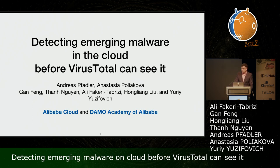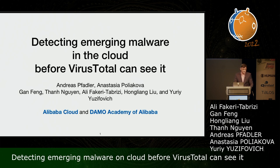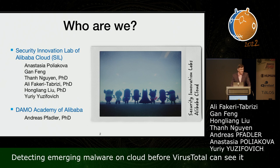We're going to talk about the work we've been doing for probably a year to develop the machinery to detect emerging malware in the cloud at scale using fuzzy hashing. A large team worked on this project. Anastasia Polikova and I, Yuri Zahh, are presenting today, but I want to mention by name that Gan Tan, Ali, and Hongliang made very significant contributions. We are from Alibaba Cloud, and Andreas is from Damo Academy of Alibaba — the research unit of Alibaba Group.